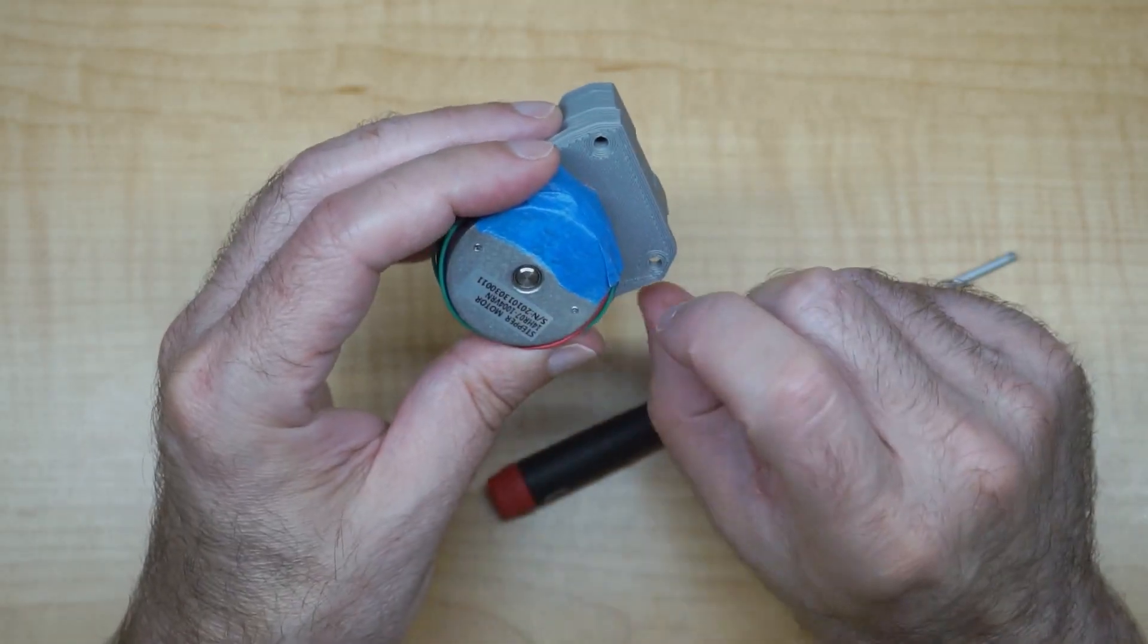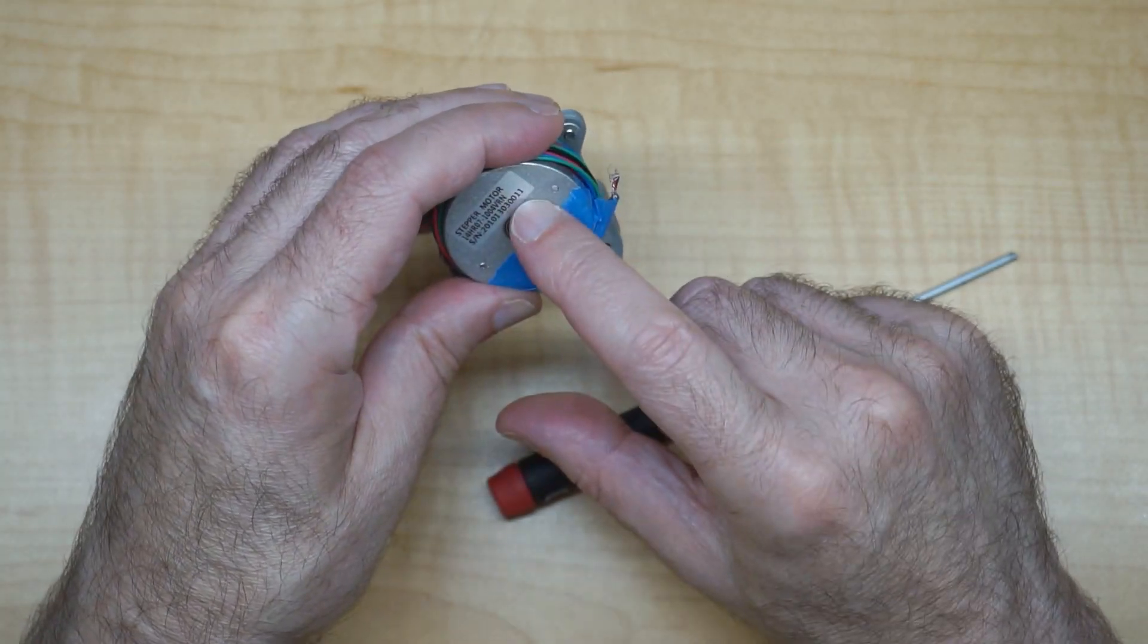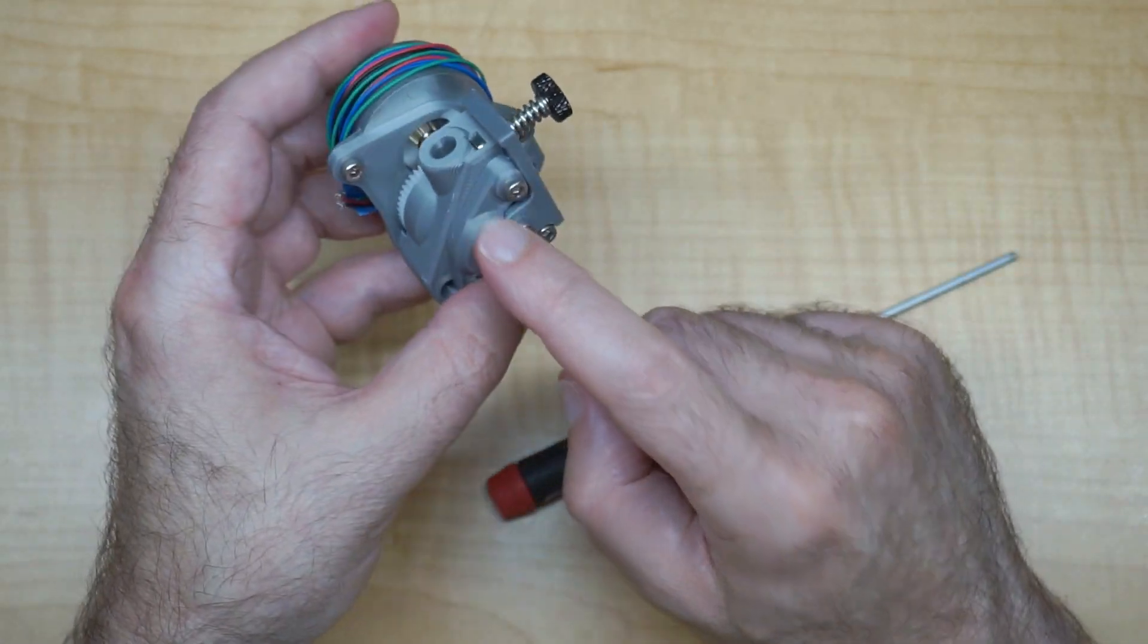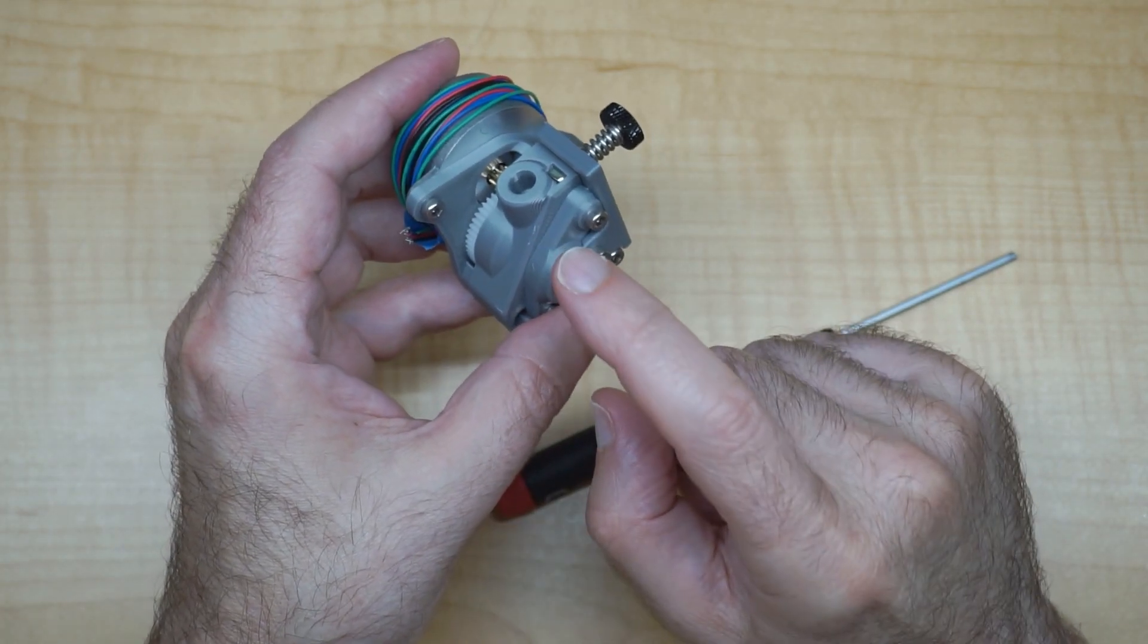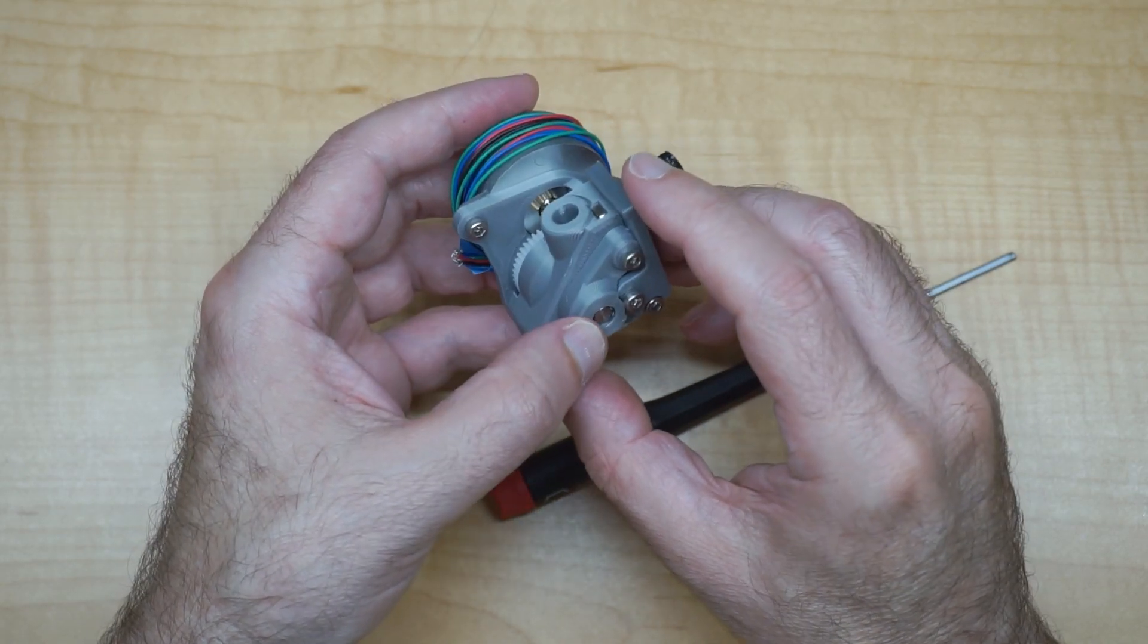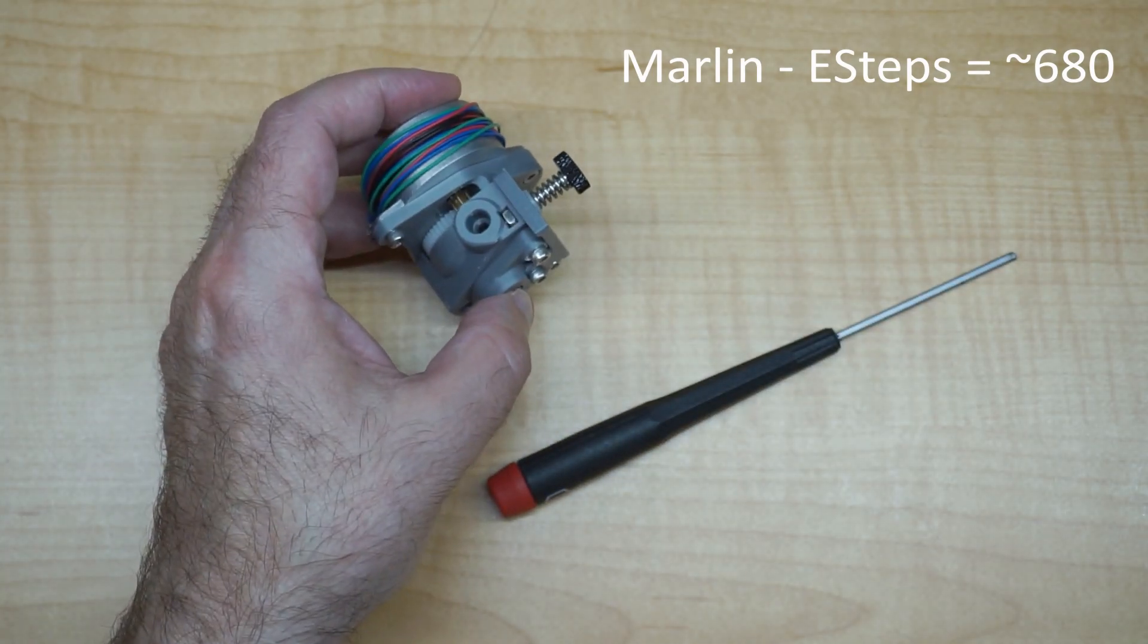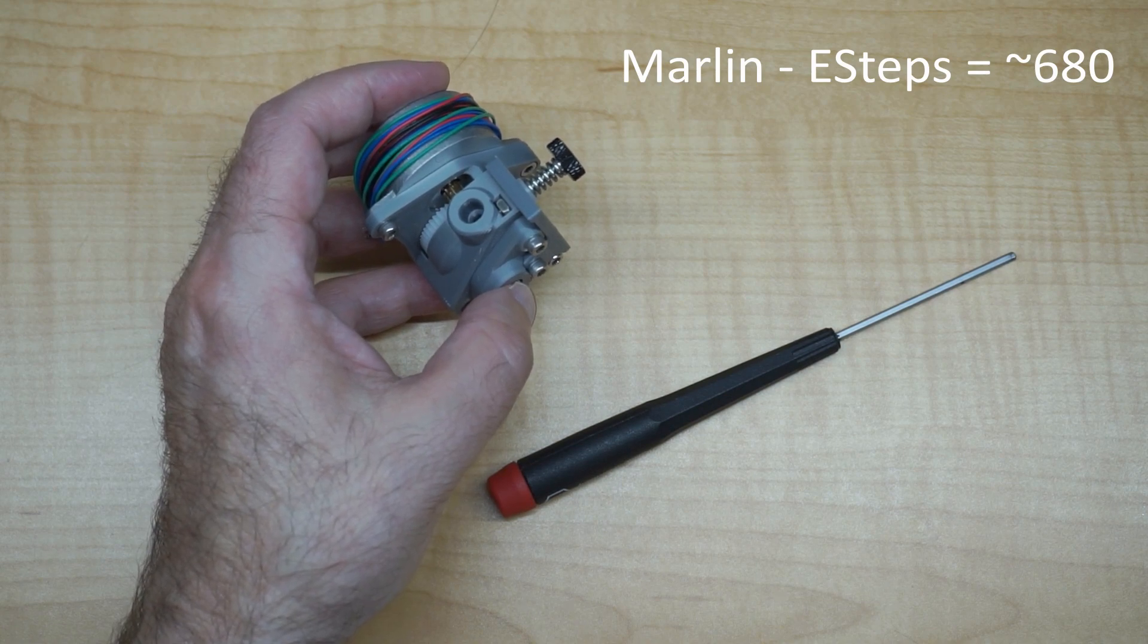It's a lightweight extruder using a NEMA 14 motor. Most of these are going to be the LDO motors - this one's from StepperOnline. They all pretty much work the same. For steps per millimeter, when I was running Marlin with this it was around 680 steps. So start there and then go up or down depending on what it looks like.